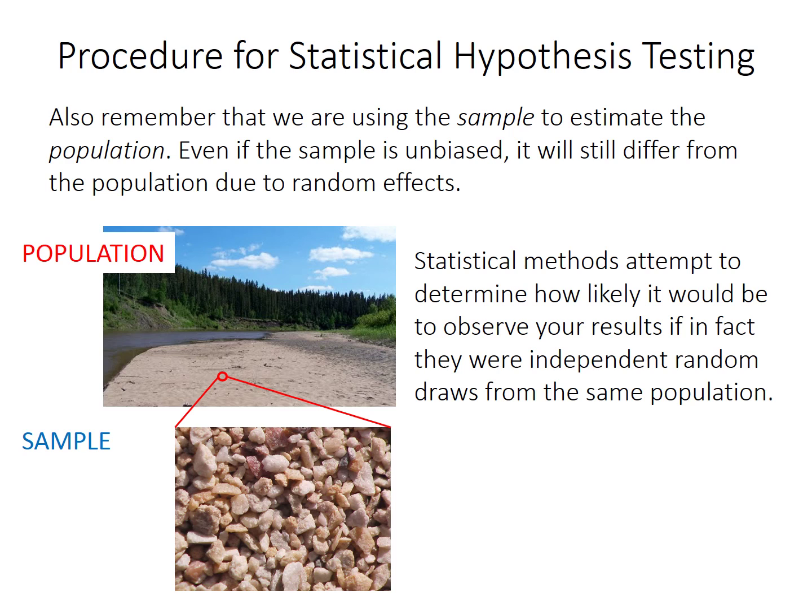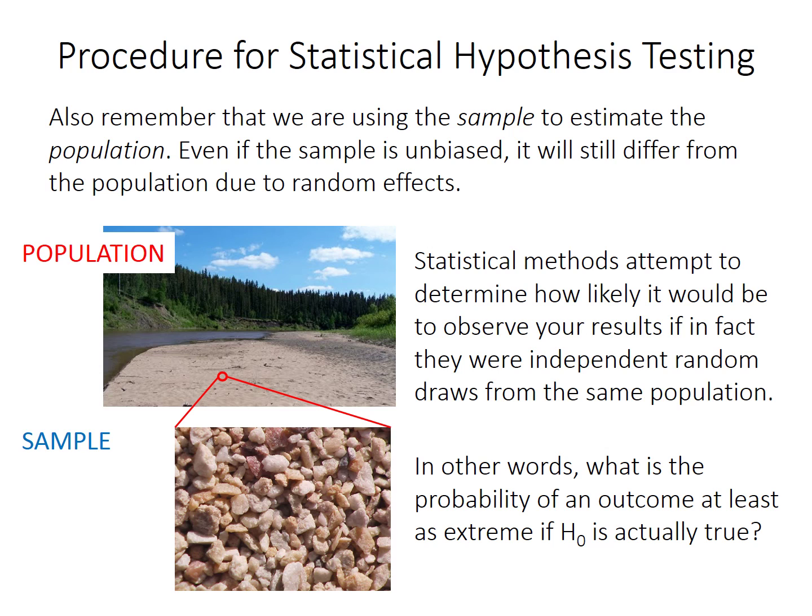So basically, how likely are your observations if, in fact, your two samples were independently drawn at random from the same population? Technically, we're going to find the probability of observing an outcome at least as extreme as your result if the null hypothesis is true. So we don't care about your specific result. We care about something at least as extreme or unusual as your result.